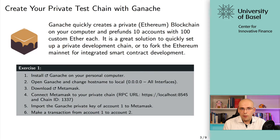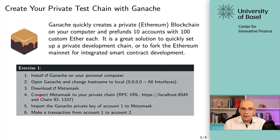What Ganache does is it sets up your own blockchain on your computer and pre-funds some accounts with test ether for your local chain. Then you can connect your MetaMask to that local chain and interact with it, just like we interacted with Robsten Testnet. The things you do in this exercise are: number one, install Ganache on your own computer; then open Ganache and change the hostname to all interfaces; you should already have MetaMask installed from the previous video. Then connect to a private chain with the RPC URL localhost 8545 and chain ID 1337.